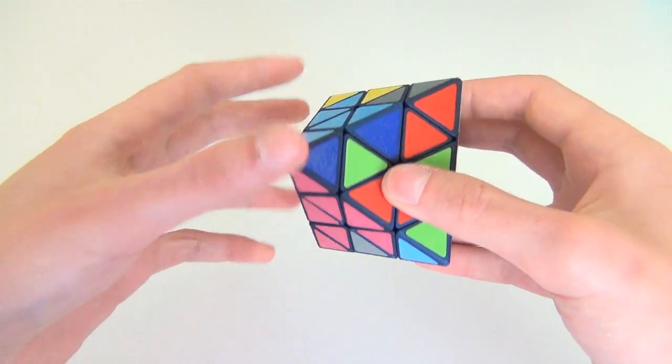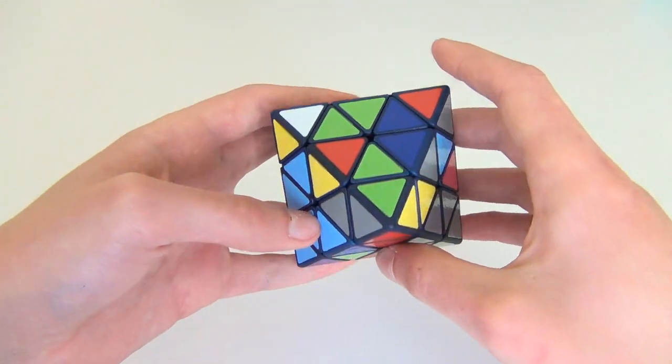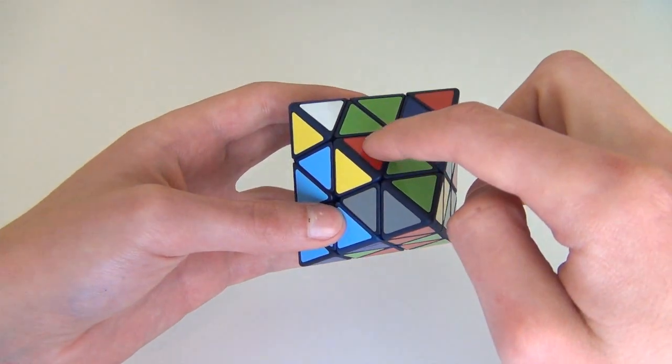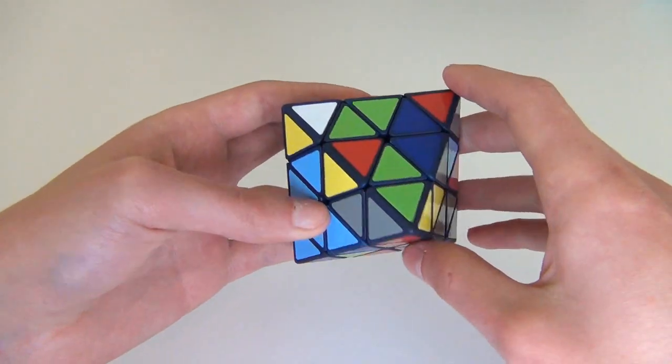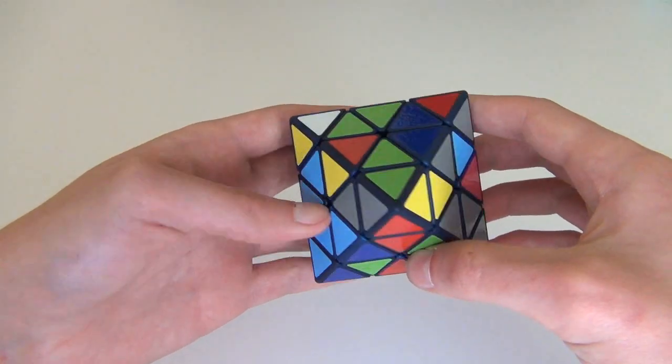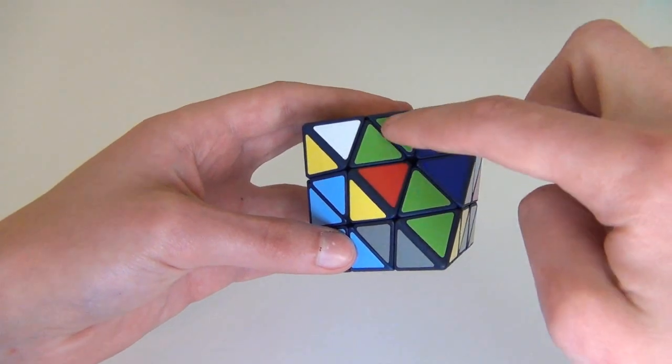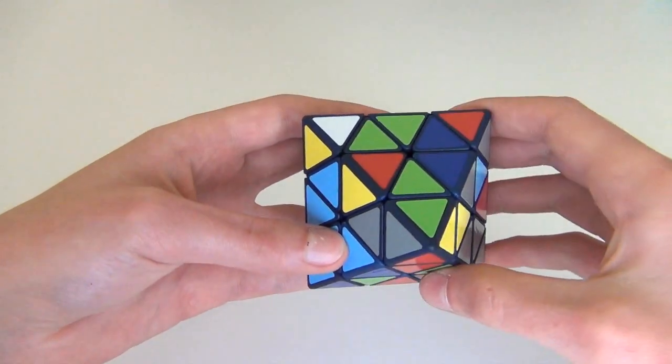So now that we have that done, we move on to our second center. So now if we look at what we got going on here, we got the red-yellow edge here, we got the red-magenta edge here, so we're going to want to pair these up. So what we can do for this is, well first we want to move this edge to the back so that it's easier to pair.